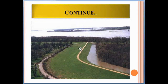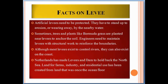Here you can see how a concrete levee is made. Artificial levees need to be protected because they have to withstand erosion, or wearing away, by the nearby water. Sometimes trees and plants like Bermuda grass are planted near levees to anchor the soil. Engineers also need to maintain levees with structural work to reinforce the boundaries.